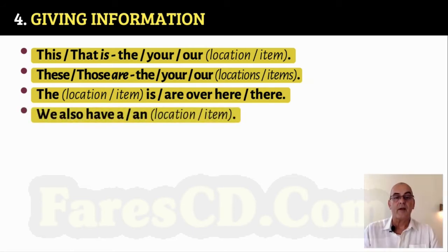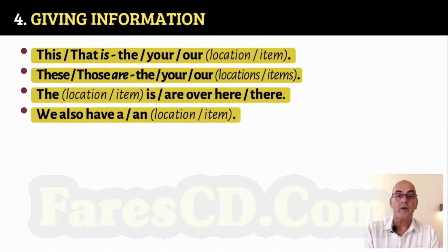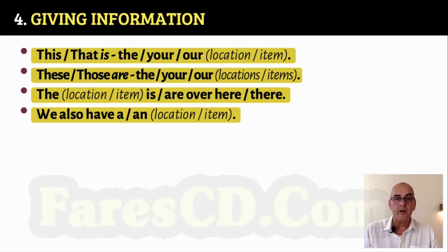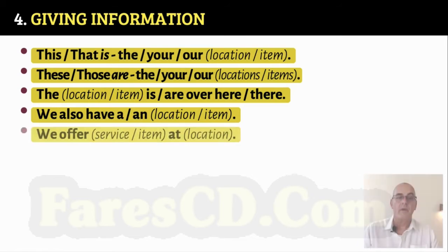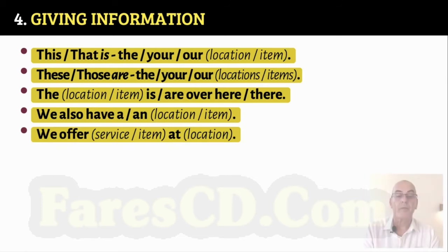We also have a — or we also have an — location or item. 'A' is used for consonant-sounding words; 'an' is used for vowel-sounding words. For example: We also have a sauna. We offer a service or item at a location. For example: We offer souvenirs at the gift shop.